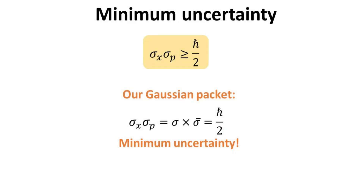Thus, we see that the Gaussian wave packet indeed achieves the minimum uncertainty of h-bar divided by 2. In summary, we explained what incompatible observables are in this video and derived the well-known Heisenberg uncertainty principle that governs these observable pairs. We further illustrated with an example where minimum uncertainty can be achieved. In a follow-up video, we will also show how one can derive a similar uncertainty relation for Fourier transform pairs. Stay tuned and subscribe so you will be notified of our future episodes.